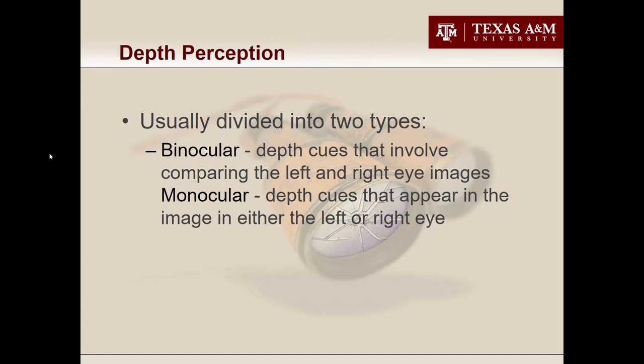There are two categories of depth perception cues: binocular and monocular. Binocular cues use both eyes — bi meaning two, ocular meaning eyes. Monocular cues only need one eye — mono meaning one. It's a common misperception that if you lost sight in one eye you would lose depth perception. That's not true. You lose binocular depth perception, but you still have many cues — there are actually more monocular depth perception cues than binocular ones.